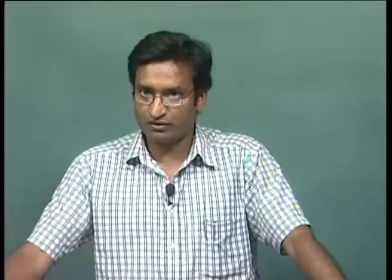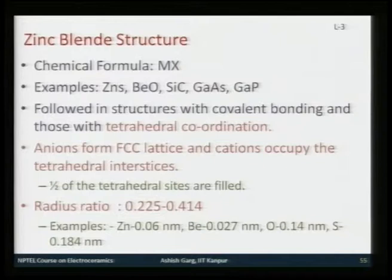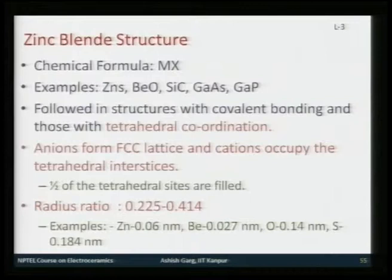We divided these ceramic structures into three broad categories. The first was structures based on FCC packing of anions. The second group would be non-FCC but still orthogonal or cubic structures. The third would be HCP packing of anions. In the FCC packing we looked at sodium chloride-based structures, also called rock salt structures, and then fluorite and antifluorite structures.